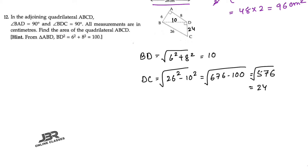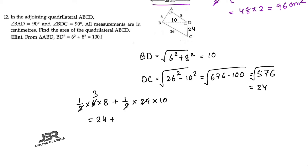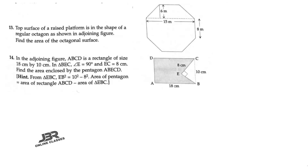To find the area of quadrilateral ABCD, add the areas of the two triangles. Upper triangle: half × 6 × 8 = 24. Lower triangle: half × 24 × 10 = 120. Total area = 24 + 120 = 144 centimeter square. That is your answer.